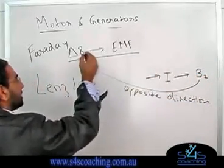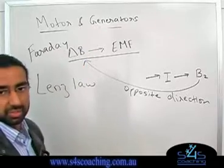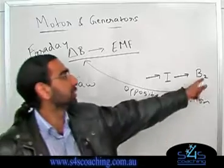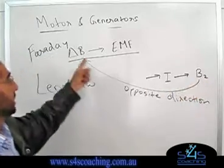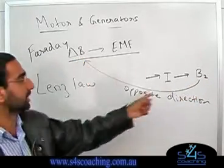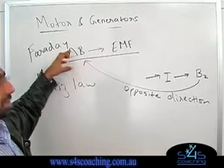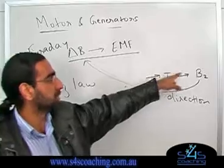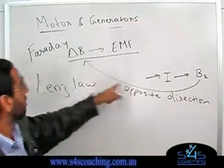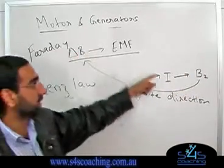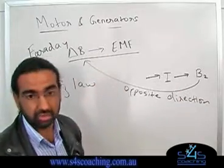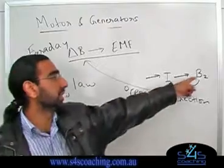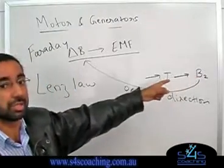Lenz's Law tells you that this new magnetic field produced by the EMF and current has to be in the opposite direction to the original magnetic field. Why? Because of the law of conservation of energy — if this new magnetic field were in the same direction, it would add to the original, creating more EMF, more current, and more of the generated magnetic field, and the cycle would continue endlessly. So to obey conservation of energy, the new field must oppose the original.